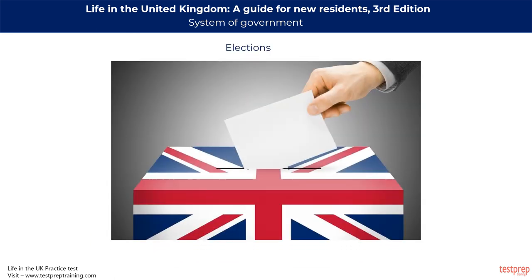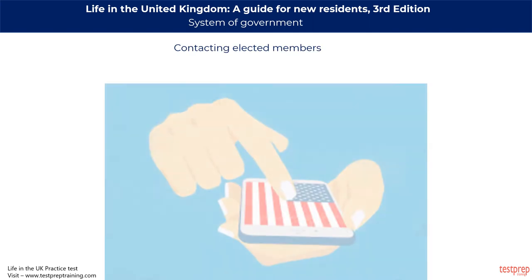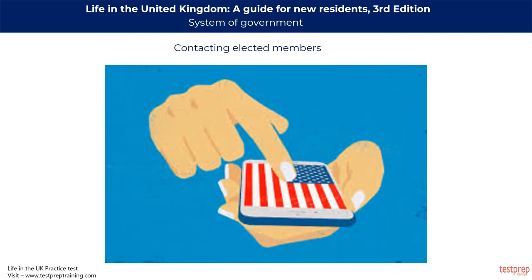MPs are elected at a general election, held at least every five years. If an MP dies or resigns, there will be a fresh election called a by-election in their constituency. MPs are elected through a system called First Past the Post, where the candidate with the most votes in each constituency is elected. The government is usually formed by the party that wins the majority of constituencies. If no party wins a majority, two parties may join together to form a coalition. All elected members have a duty to serve their constituents, and contact details are available at www.parliament.uk, in phone books, and in Yellow Pages.